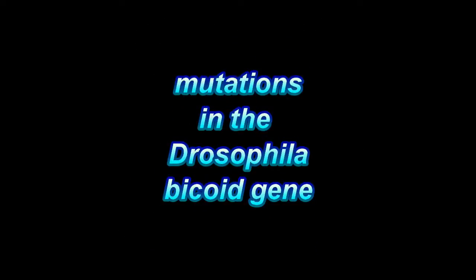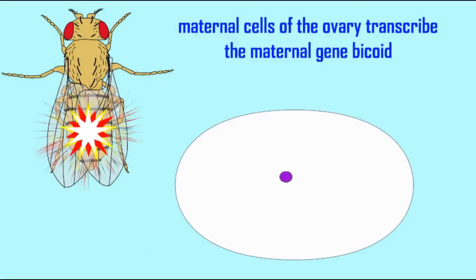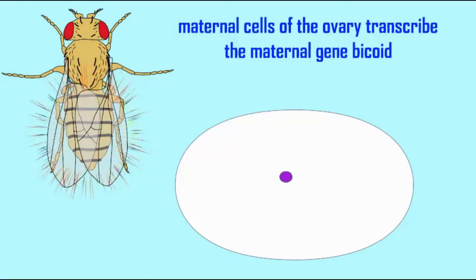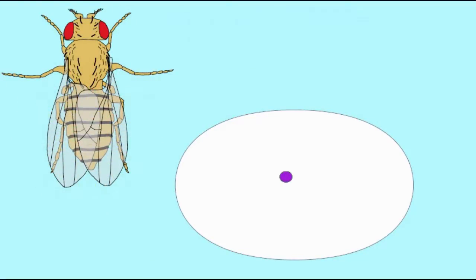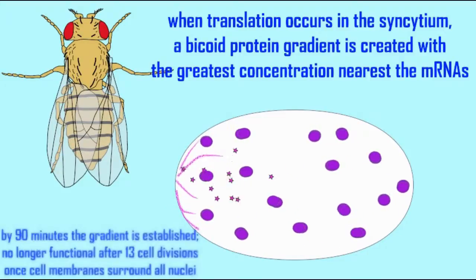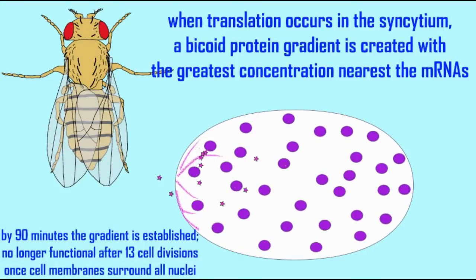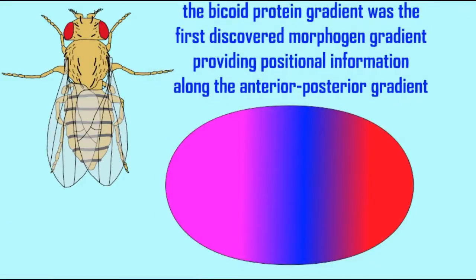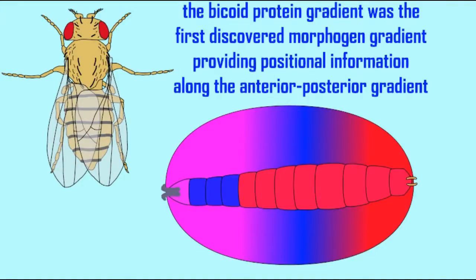Maternal expression of the gene bicoid in Drosophila females allows mRNAs to be anchored to the anterior pole of the egg. After translation, a gradient of the bicoid protein is established, which acts as a morphogen, providing information to embryonic cells as to their position, allowing the embryo to establish an anterior-posterior axis.